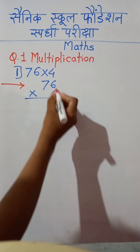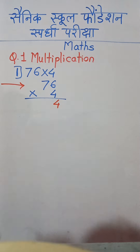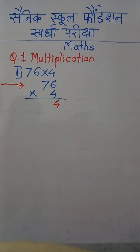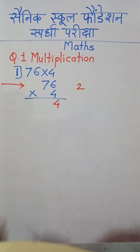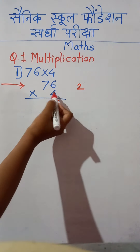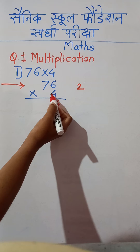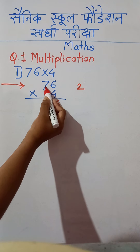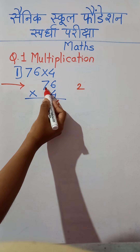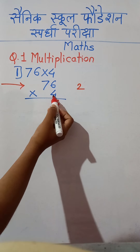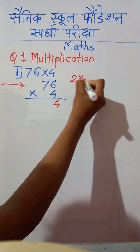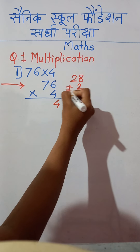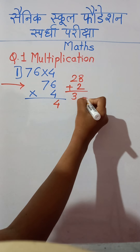4 times 6 is 24. So we write 4 here and 2 will be carried. Now we multiply 4 by the tens place digit, that is 7. So 4 sevens are 28, plus carry 2 will be 30.